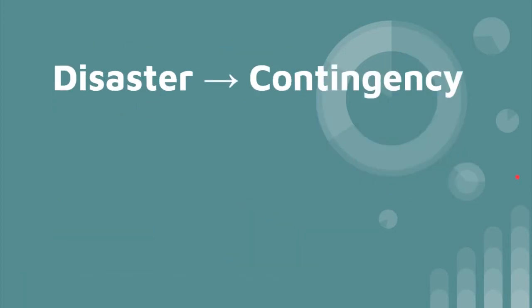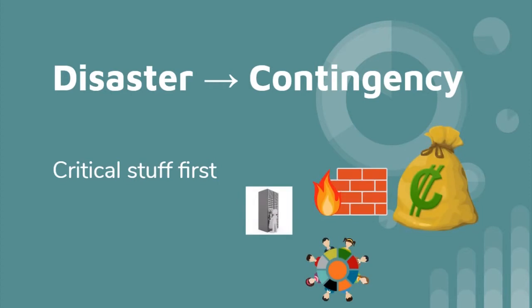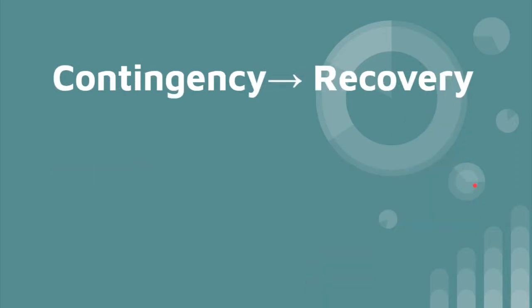So when a disaster happens, you basically have a failure of the continuity. And then what happens is you're going to enact or initiate the contingency. The continuity is keeping the business going, and the contingency is when you're going to recover the critical stuff first — the sales, the firewalls, the web applications, and the staff needed to support all those functions and tasks to keep the business going or to resume the business.